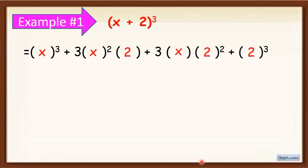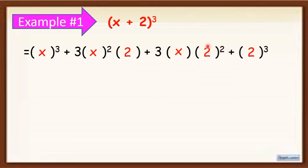Now remember the pattern. First term: cube the first term. Second term: multiply 3 times the square of the first term times the second term. Third term: multiply 3 times the first term times the square of the second term. Fourth term: cube the second term.